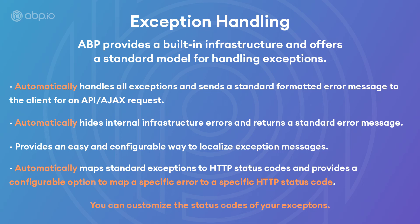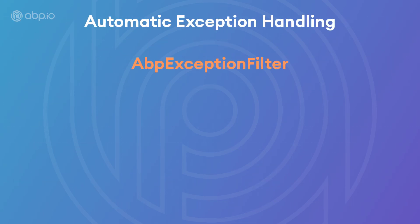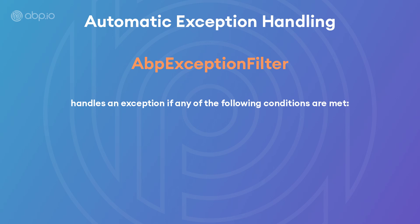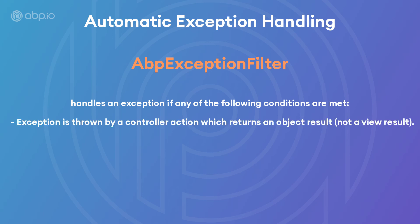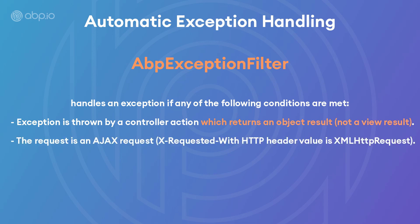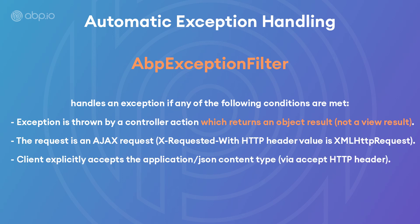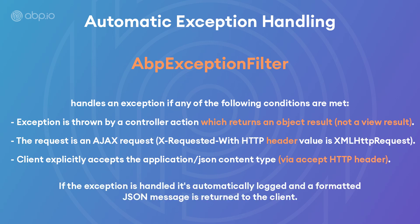All of that automation is thanks to the ABP exception filter, which handles an exception if any of the following conditions are met: an exception is thrown by a controller action which returns an object result, not a view result; the request is an AJAX request with the X-Requested-With header value of XMLHttpRequest; or if the client explicitly accepts the application/JSON content type through the Accept HTTP header. If the exception is handled, it is automatically logged and a formatted JSON message is returned to the client.